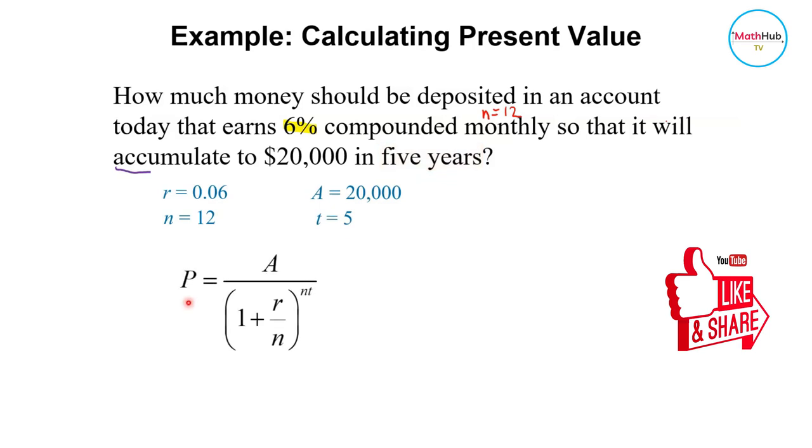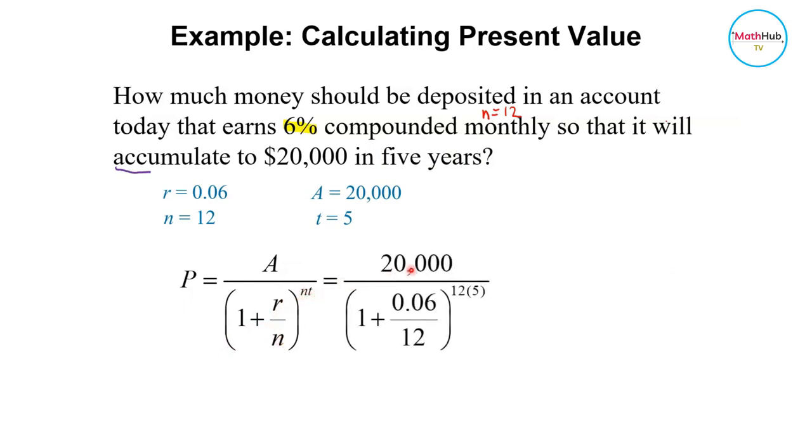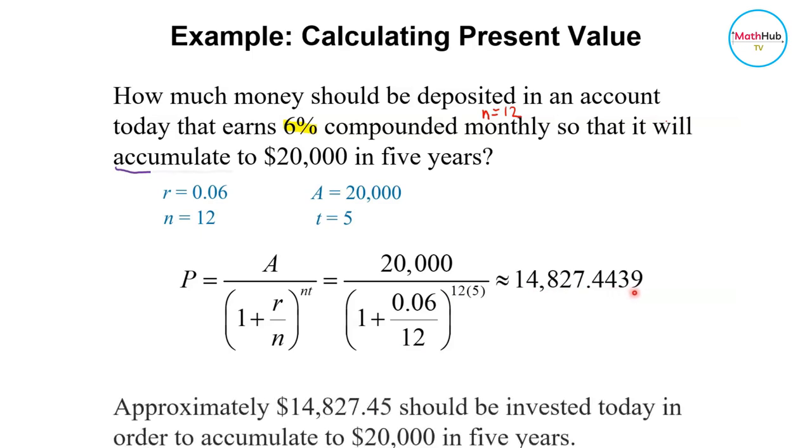We use the formula for the present value, which is A over 1 plus r over n raised to nt. This equals $20,000 divided by 1 plus 0.06 divided by 12 to the 12 times 5. That equals $14,827.44. So this is the present value.